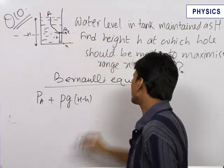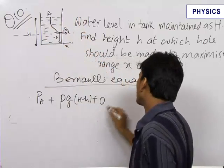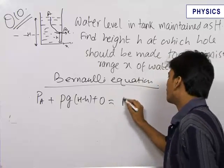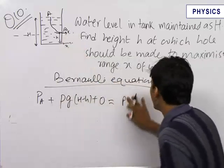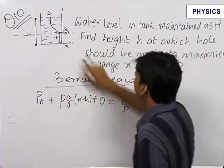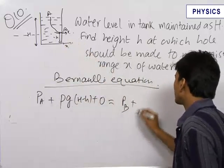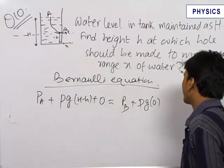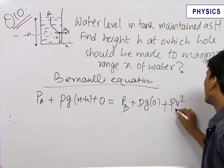This equals P_B, the pressure at point B, plus ρg times zero, since the height of this point from reference level is zero, plus ρV²/2.